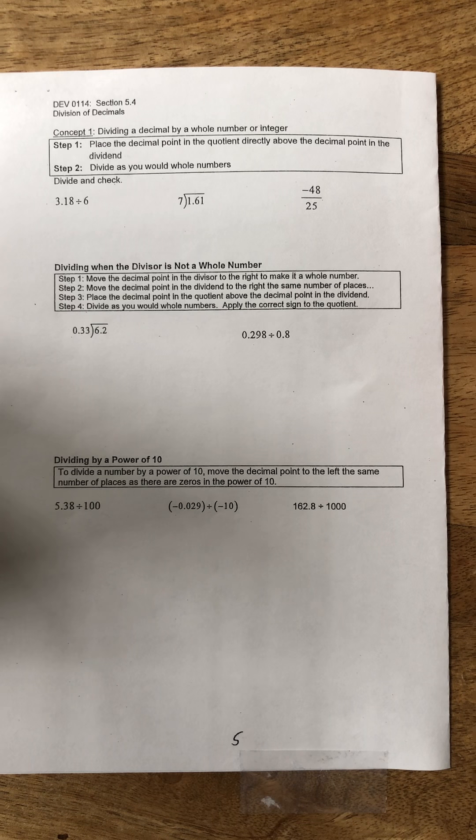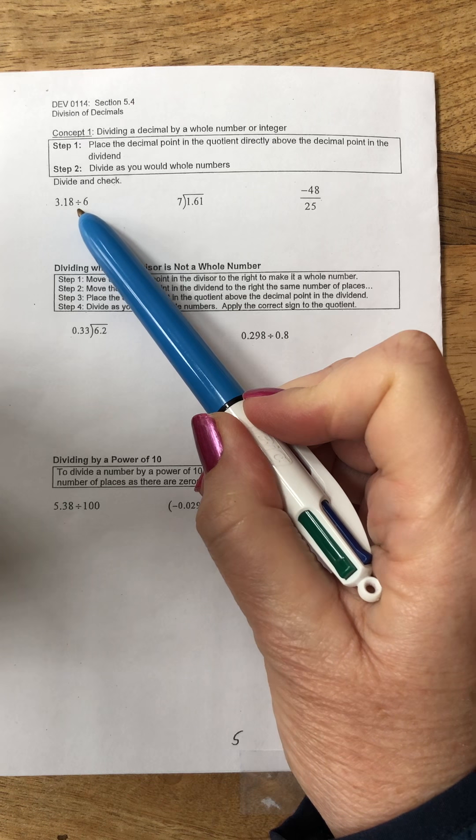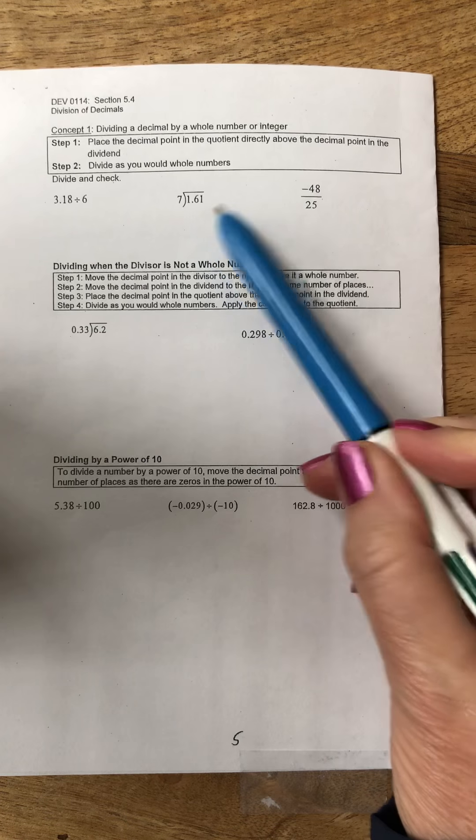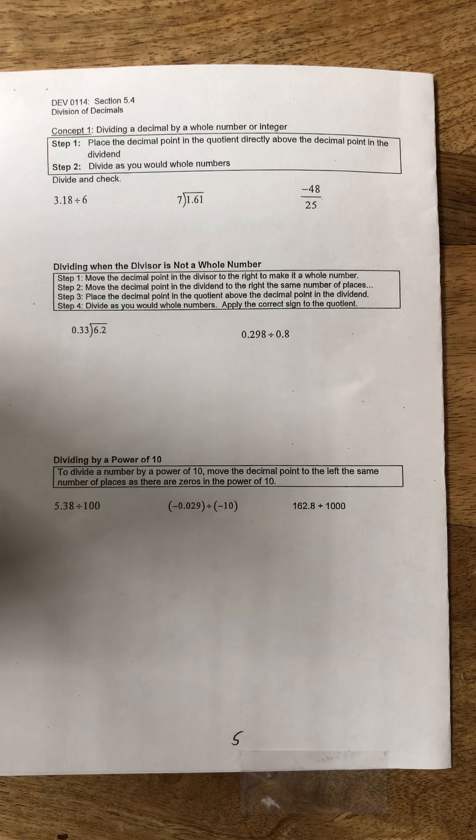Section 5.4 is division of decimals. You can see that we can use different symbols: the divided by sign, the radical sign, or a fraction. A quotient of integers indicates division.